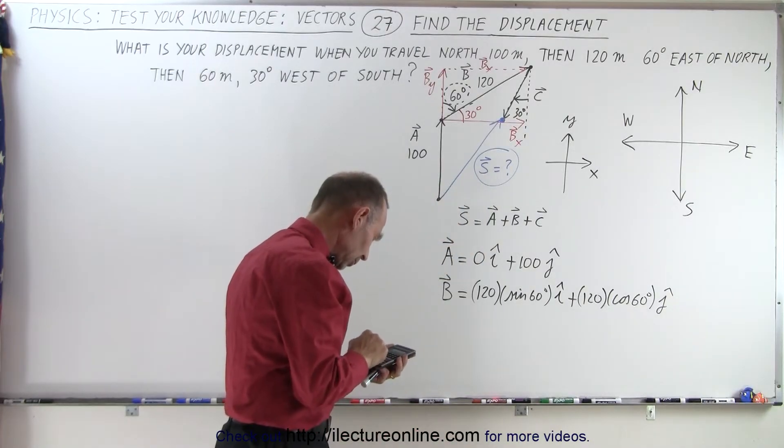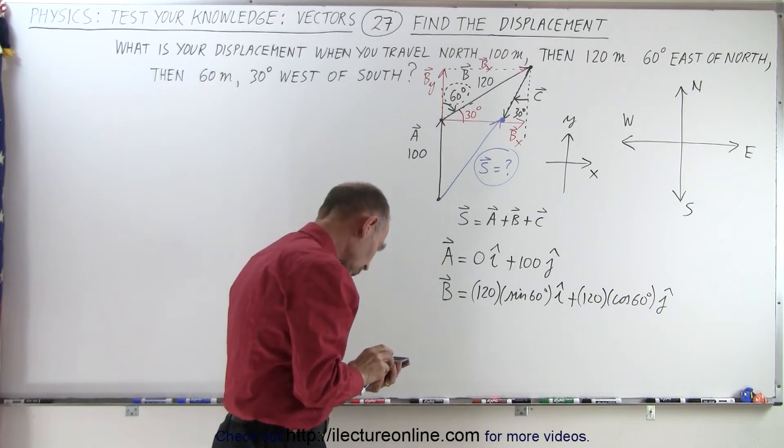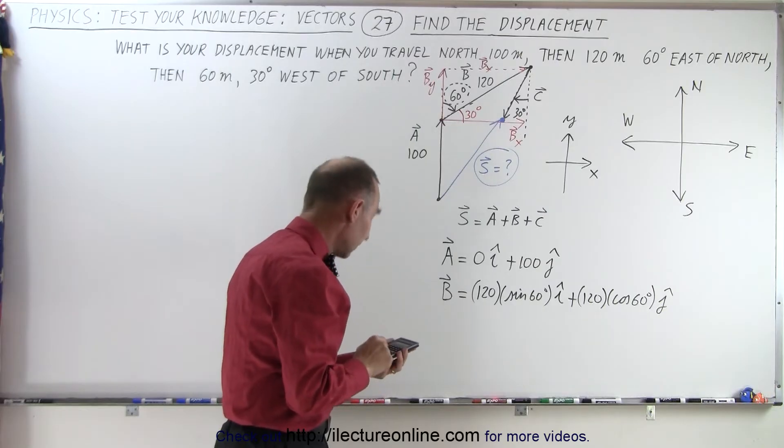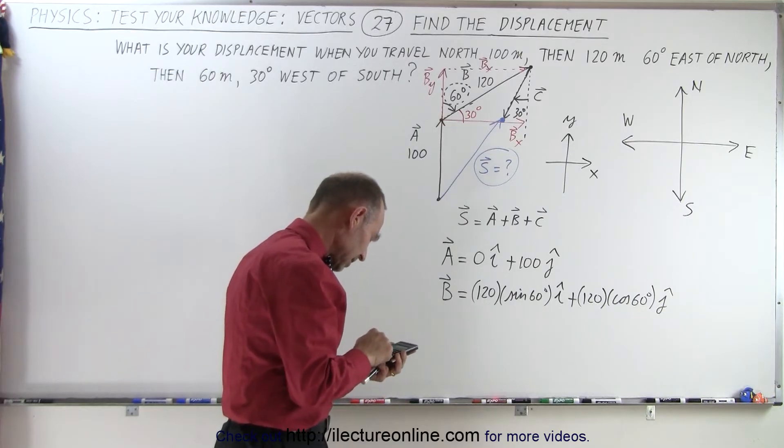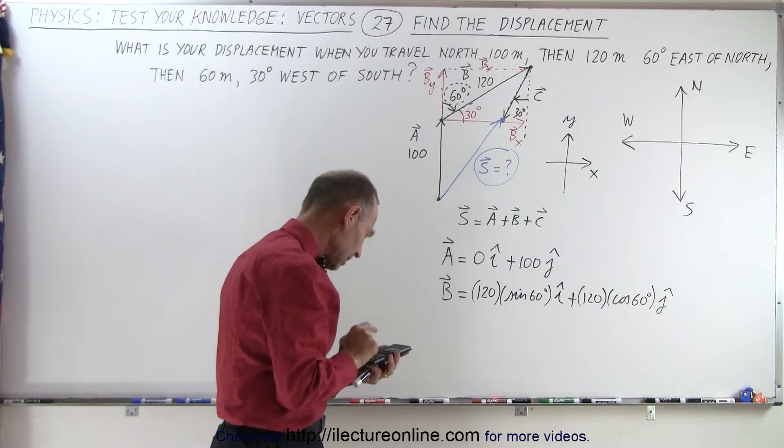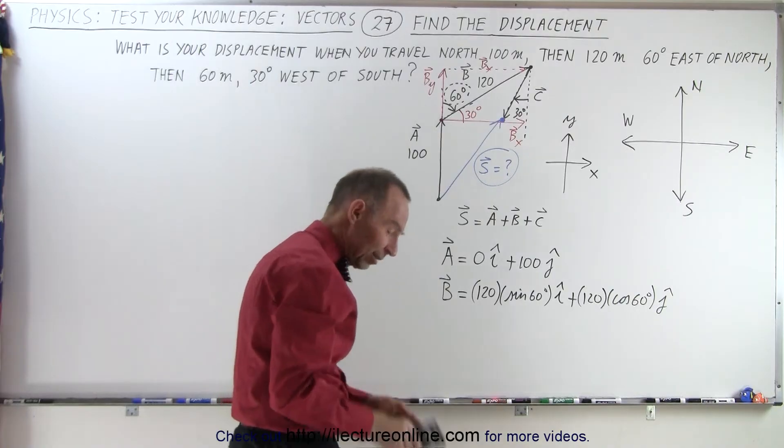60, take the sine of that, times 120. That's one, oh, let me try that again here. 60, take the sine, times 120. That's 103.9. Let's call it 104.